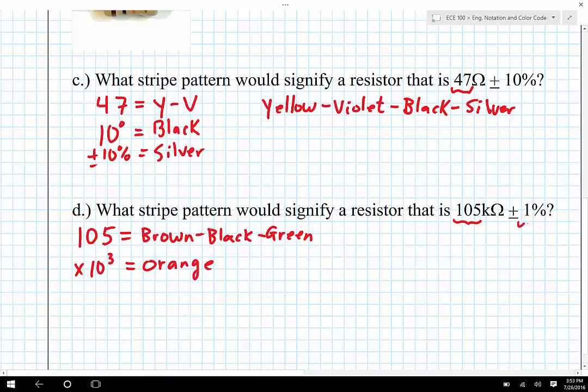And what we have is a tolerance of plus or minus 1%. And if you go back and look in the notes, plus or minus 1% requires a stripe of tolerance which is brown. So plus or minus 1% is equal to brown.